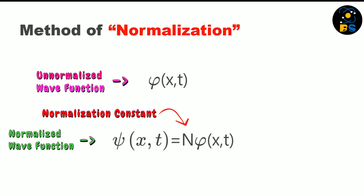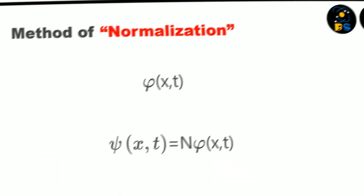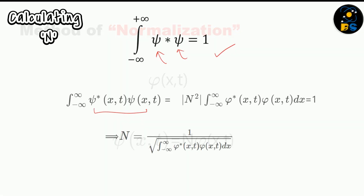Our final wave function psi can be represented as N times phi. Now we have to find this normalization constant N to get the final wave function. To find N, we use the normalization condition again. We substitute our wave function psi into the condition — one is the conjugate and the other is just psi. After substituting, N comes out, and we get N equal to one over the square root of the integral from minus infinity to infinity of phi-star times phi dx.